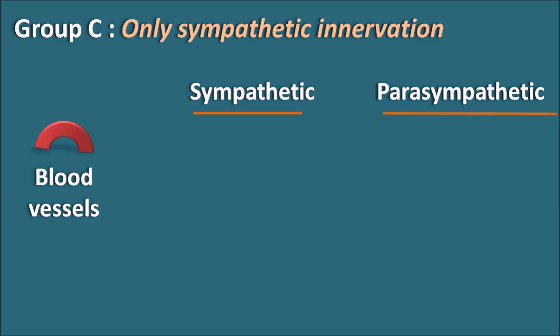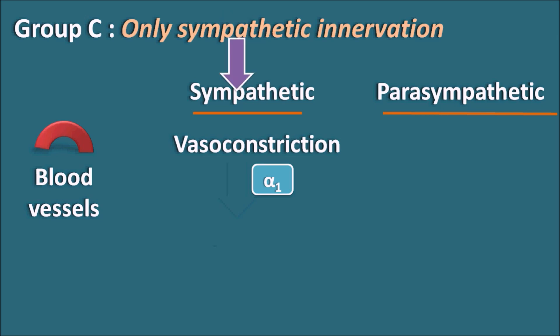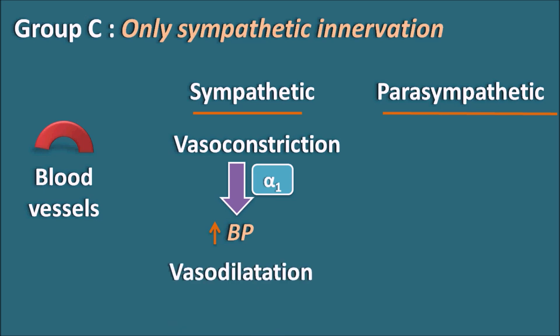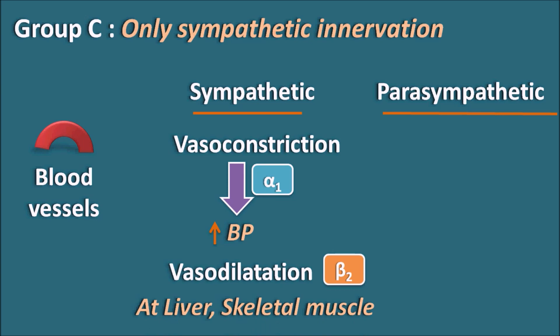The next category is blood vessels. At the blood vessels, the sympathetic system produces vasoconstriction mediated by alpha 1 receptors at most systemic blood vessels, resulting in an increase in blood pressure required to combat stressful conditions. The sympathetic system can also produce vasodilation where blood supply needs to be increased under stressful conditions; this vasodilation is mediated through beta 2 receptors, observed at organs like the liver and skeletal muscle.